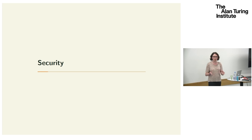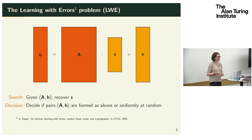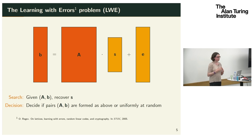Now I want to move on to the first practical consideration, which is security. Essentially all of the homomorphic encryption schemes currently being used have their security ultimately based on the Learning With Errors (LWE) problem. We have a secret vector S, a public matrix A, and we form a vector B by taking a row of A, multiplying by S, and adding a small error term. The search LWE problem is to recover S given A and B.